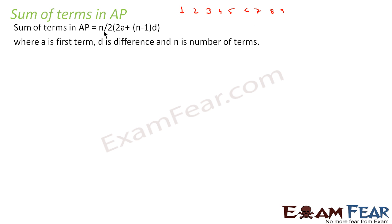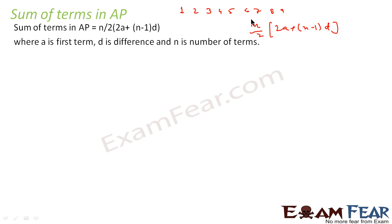The sum of terms in AP is represented by N/2 × (2A + (N−1)D). N is the number of terms — for example, if you want to find the sum of 100 terms, then N will be 100. A is the first term, so in this case it will be 1. D is the common difference; in this case it will also be 1, because every day you are asked to increase your count by 1.